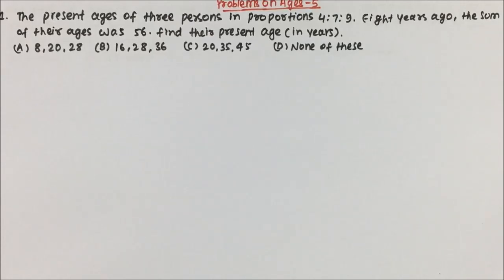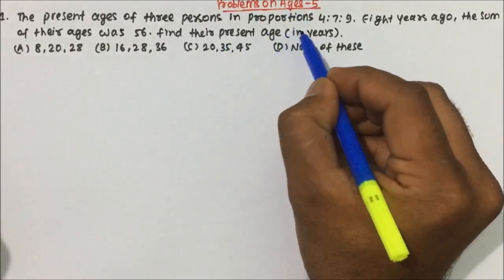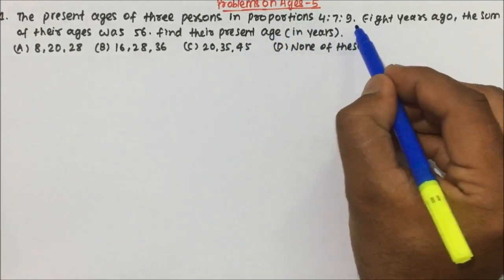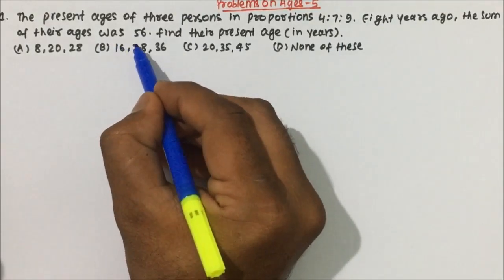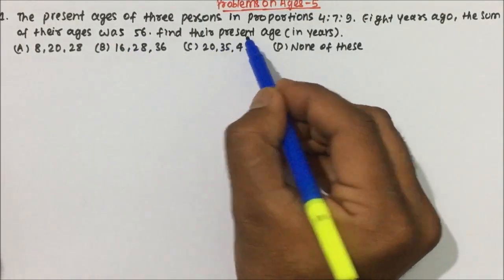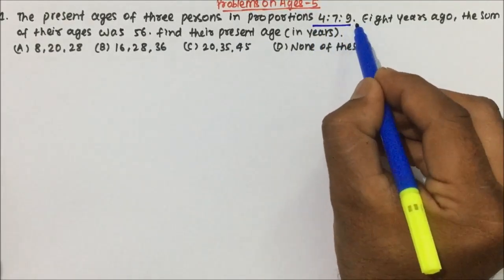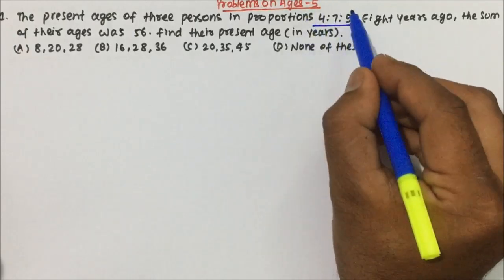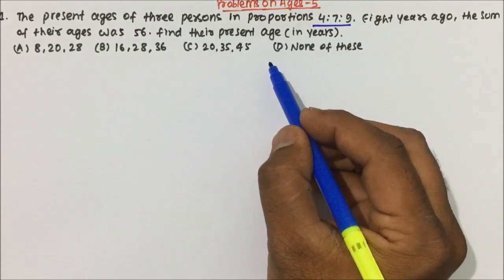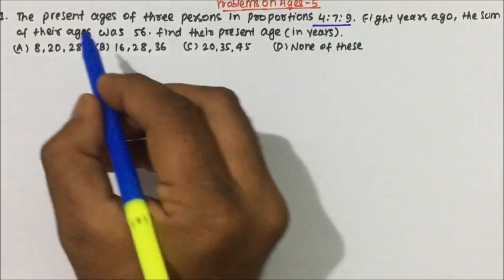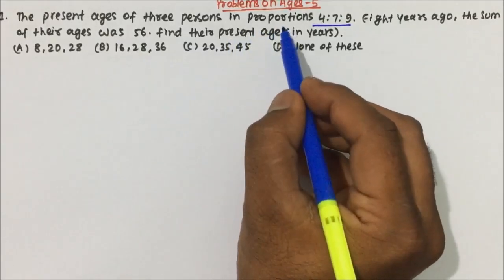Let's understand the question and try to solve it. The present age of three persons is in the ratio 4:7:9. Eight years ago, the sum of their ages was 56. Find their present ages. Generally nowadays, questions come in the ratio format, and wherever the ratio is given, the question becomes very easy.